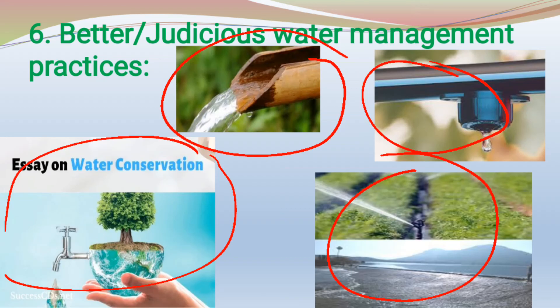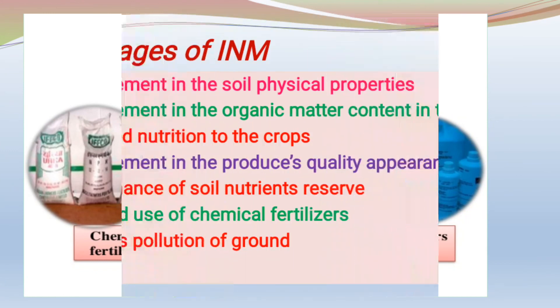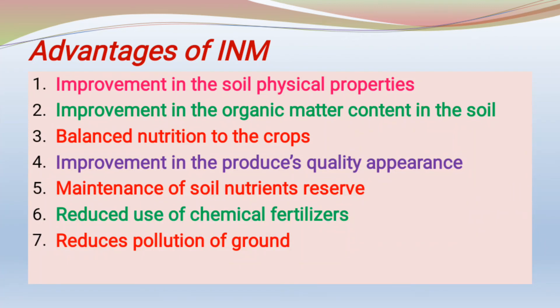Next, the advantages of INM. The first advantage is improvement in soil physical properties such as granulation, porosity, water holding capacity, drainage capacity, soil aeration, and other soil properties. The next advantage is improvement in organic matter content in the soil. Also, balanced nutrition to the crop, better nutritional uptake, and hence better plant growth and yield. Next advantage is improvement in produce quality — appearance, taste, and nutritional richness.